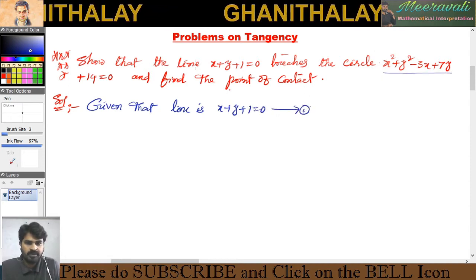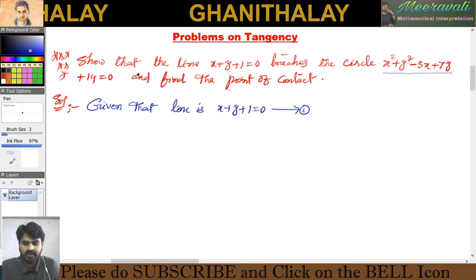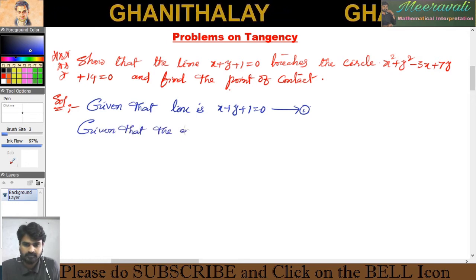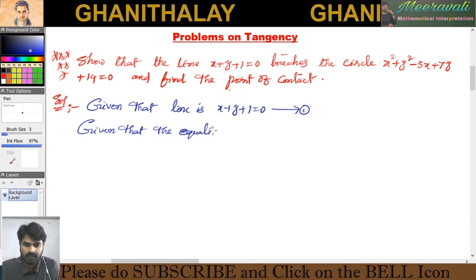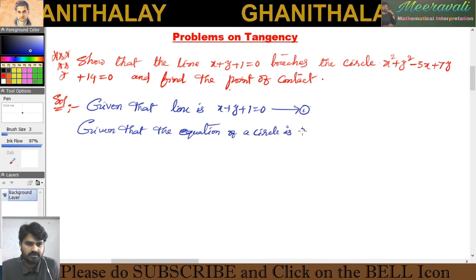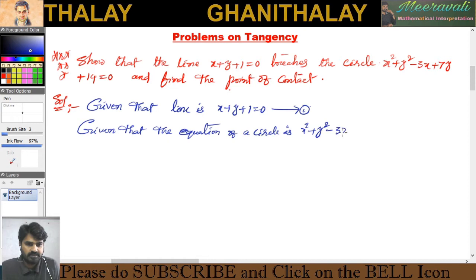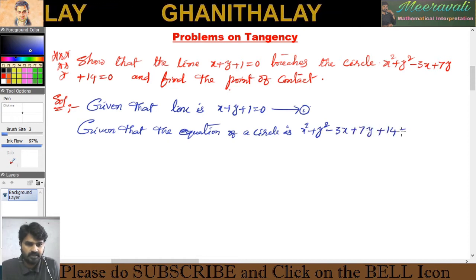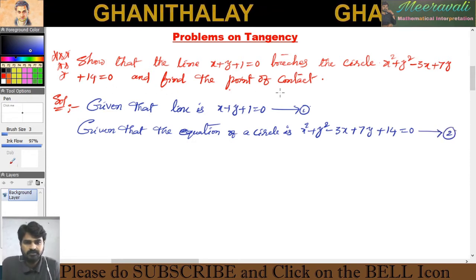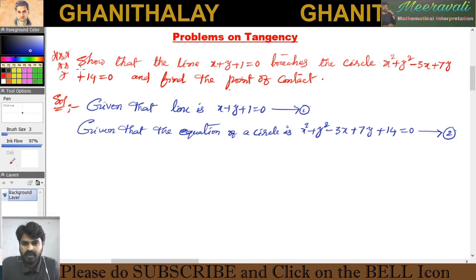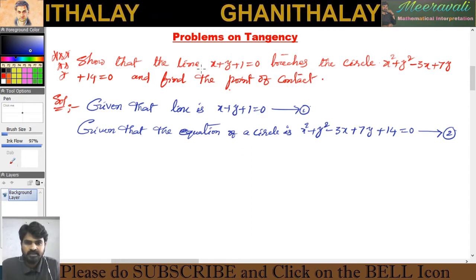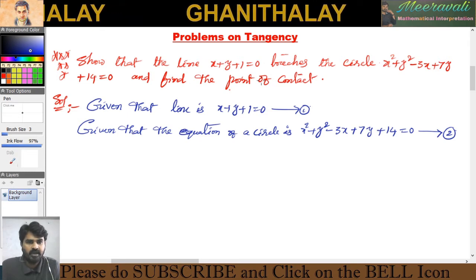Next, a circle will be given. The equation of the circle is x squared plus y squared minus 3x plus 7y plus 14 is equal to 0. This is equation number 2. We have to find: first, show that the line touches the circle — that is, we need to know the condition for a line to touch the circle.